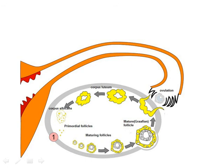If fertilisation does not occur, the corpus luteum deteriorates into a non-functional body, which you can see on the left-hand side is called the corpus albicans.